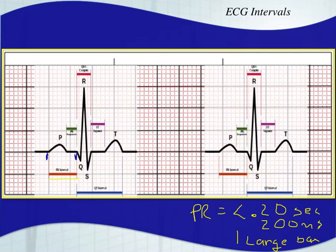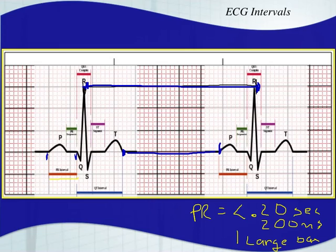There are also a couple of other intervals we haven't talked about yet. We have the R-R interval — from one QRS complex to the next. That's important because when we're looking for regularity, we need to measure out our R-R intervals. Also, you have your T-P segment — from the end of the T wave to the beginning of the next P wave. So your R-R interval is here, and your T-P segment is down here.